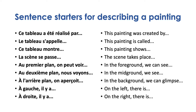La scène se passe... — The scene takes place... Then you say where. For example: La scène se passe à la plage — The scene takes place at the beach. Au premier plan, on peut voir... — In the foreground, we can see... Au deuxième plan, nous voyons... — In the midground, we see... À l'arrière plan, on aperçoit... — In the background, we can glimpse... À gauche, il y a... — On the left, there is... À droite, il y a... — On the right, there is...